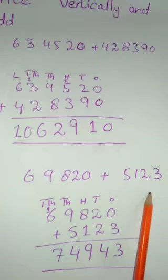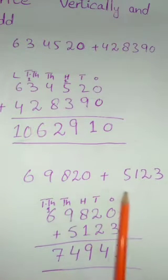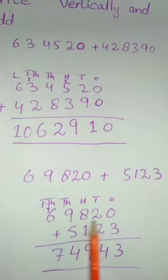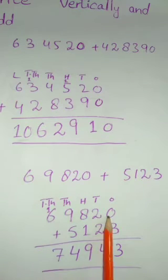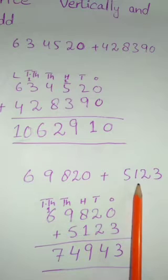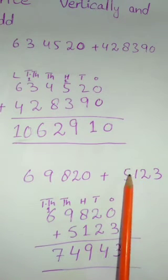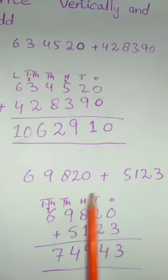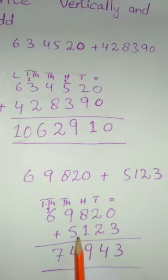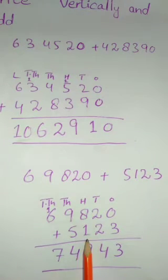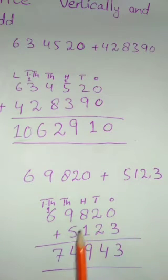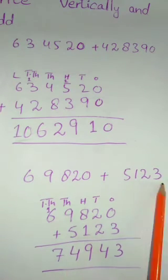Students, if you have one smaller number and one greater number, how will you arrange them? Write the first number according to its place value. Now check which place value your smaller number starts from — here we have ones, tens, hundreds, and thousands. So you will start writing this number from the thousand place value and write the whole number. Thousand at thousand place, hundreds at hundreds, tens at tens, and ones at ones.